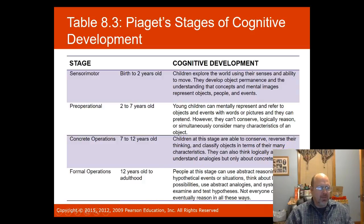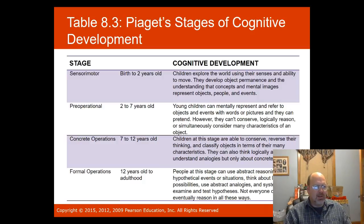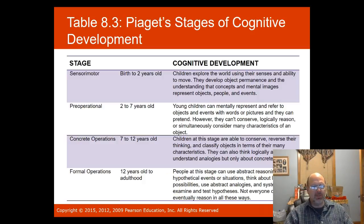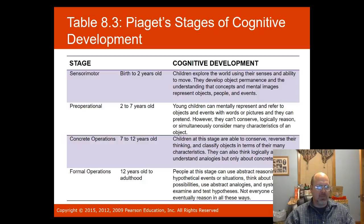The concrete operational stage covers seven to twelve years old. Children are able to conserve, reverse their thinking, and classify objects in terms of many characteristics; they also begin to think logically and understand analogies, but only about concrete events. Formal operations, from twelve years to adulthood, is where individuals can use formal abstract reasoning, think about hypothetical events, and use abstract analogies — not everyone reaches this stage without formal education.